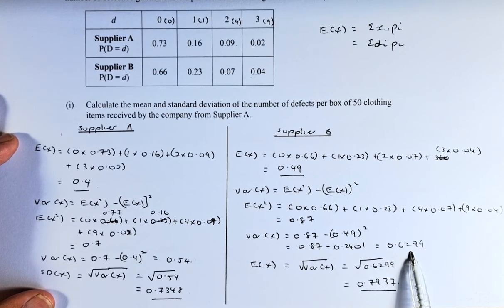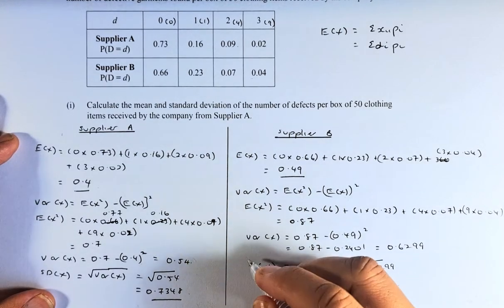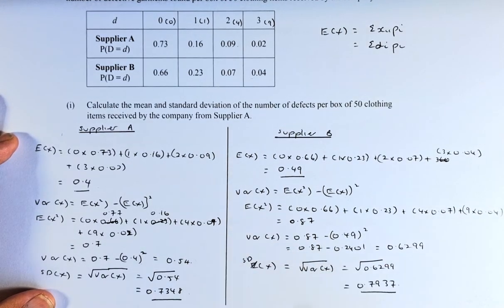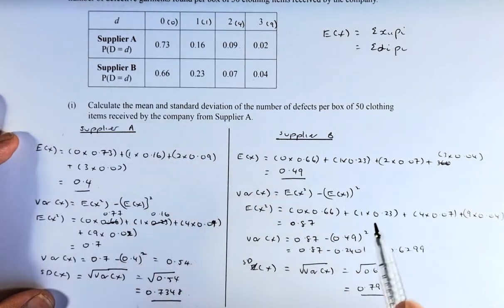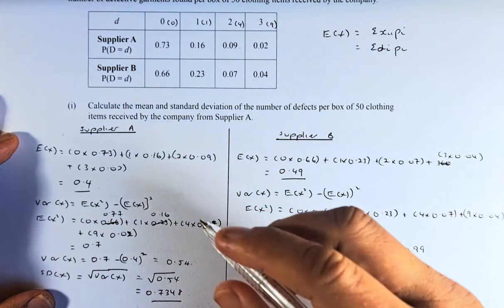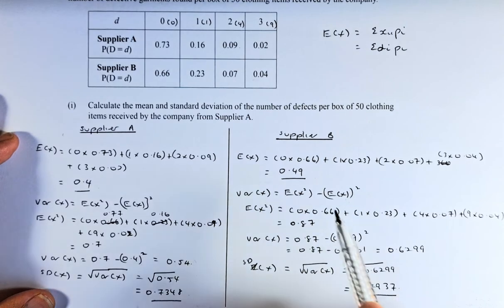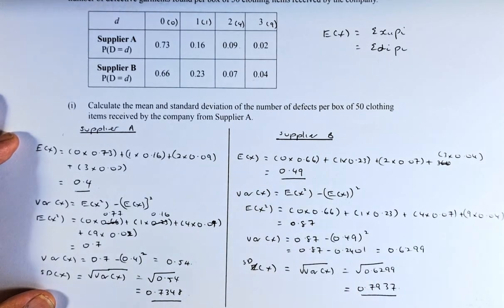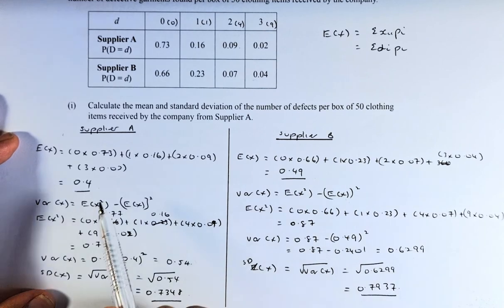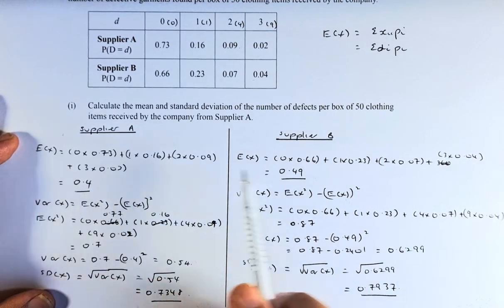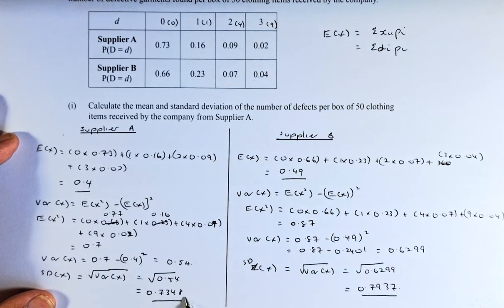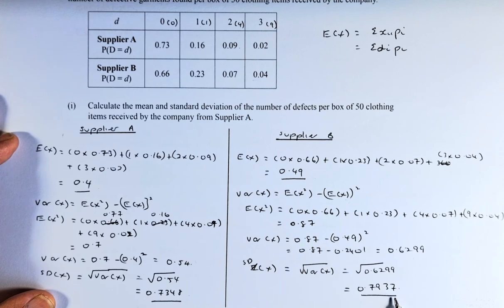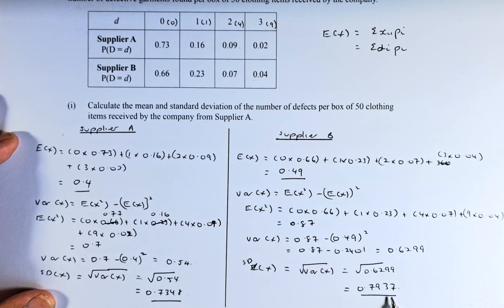To find the standard deviation, you have to square root the variance, the square root of this number, and the answer is 0.7937. If you can get this part, that will give you a merit. We just calculated Supplier B because we need to answer that in the next question. The mean for Supplier A is 0.4, the mean for Supplier B is 0.49, the standard deviation for Supplier A is 0.7348, and the standard deviation for Supplier B is 0.7937, and we are going to transfer this result to the next question, which is part 2.